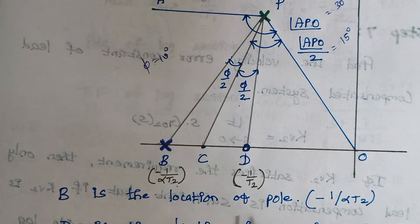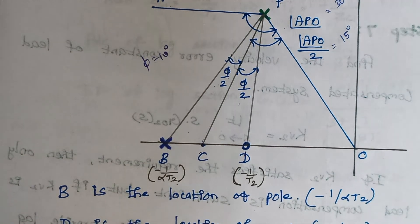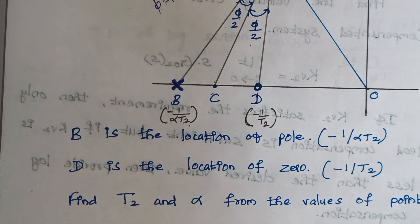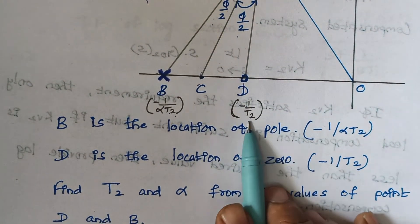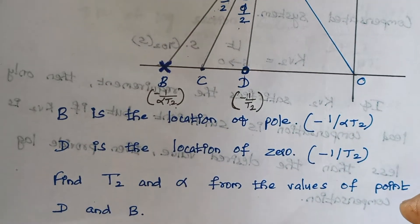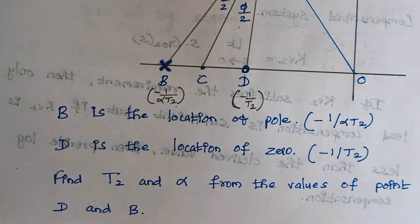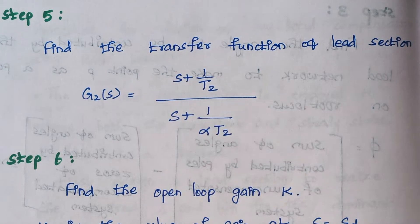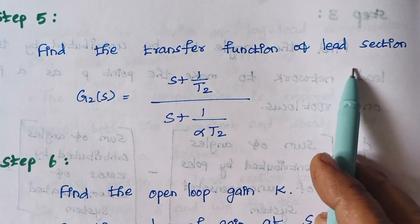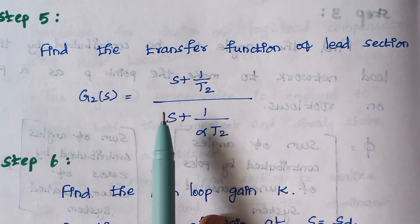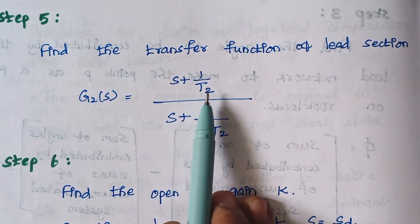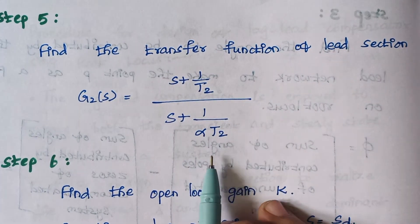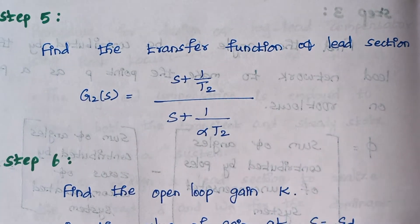From the locations of points b (pole) and d (zero) on the x-axis, we calculate the values of t2 and alpha. Step 5: The transfer function of the lead section is given by (s + 1/t2) divided by (s + 1/(alpha·t2)).